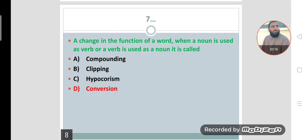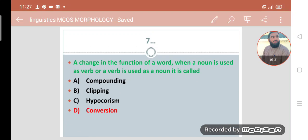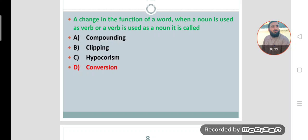Number seven: A change in the function of a word, when a noun is used as verb, or a verb is used as noun, it is called conversion. When we change the function of one word, for example, sometimes one word is used as a noun, and another time we use the same word as a verb or as an adjective, this process is called conversion.